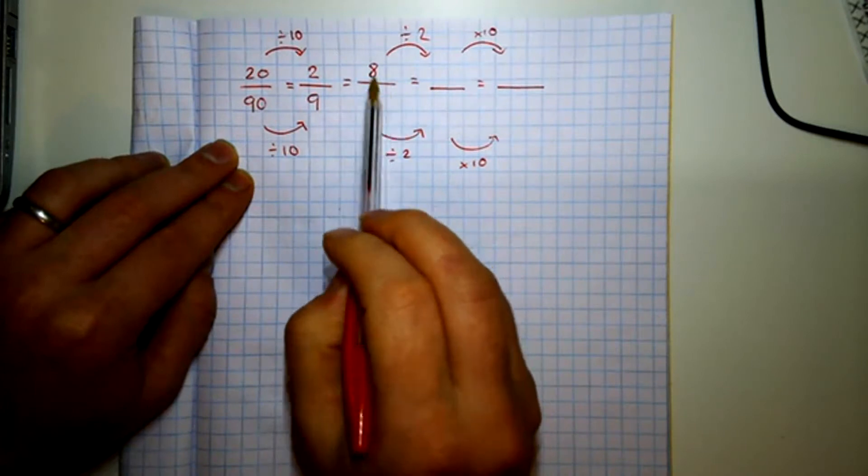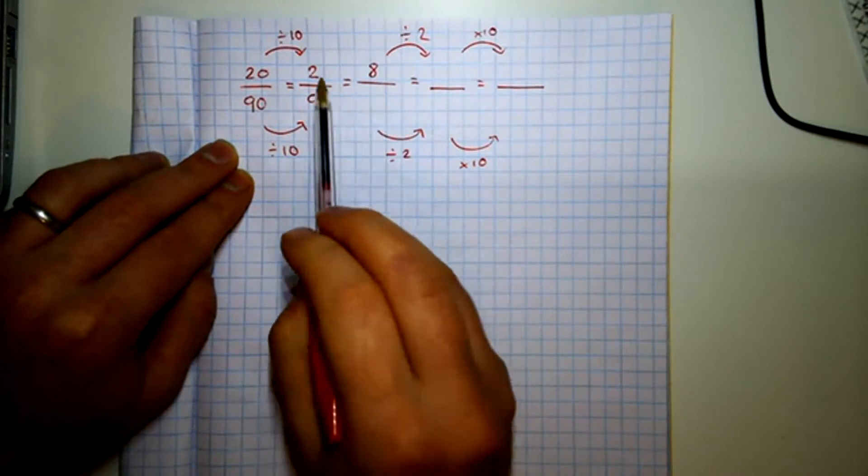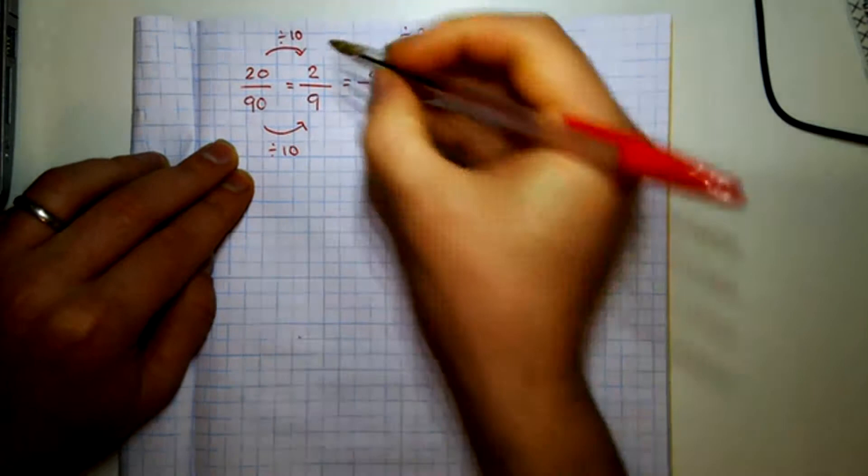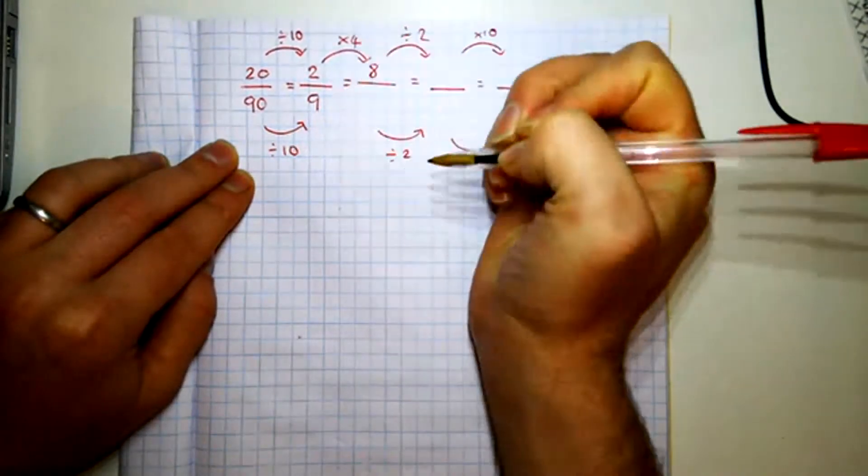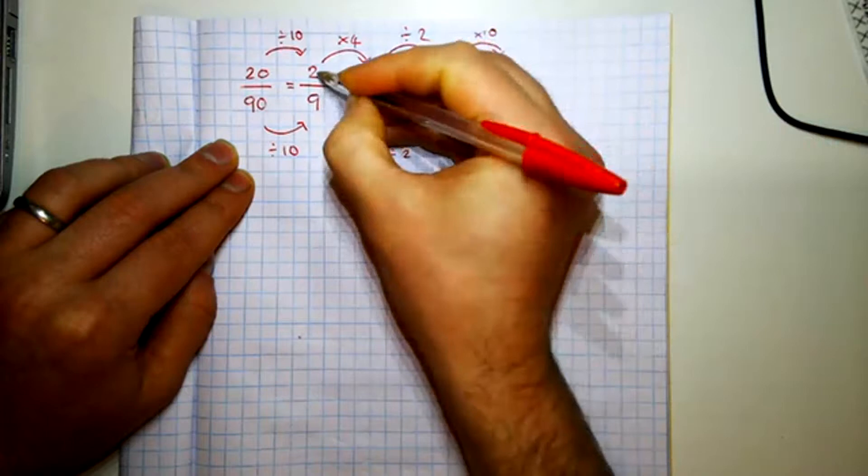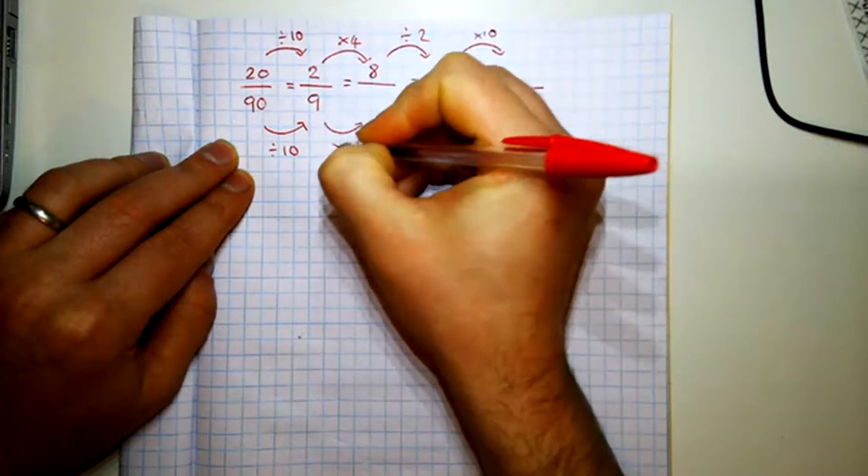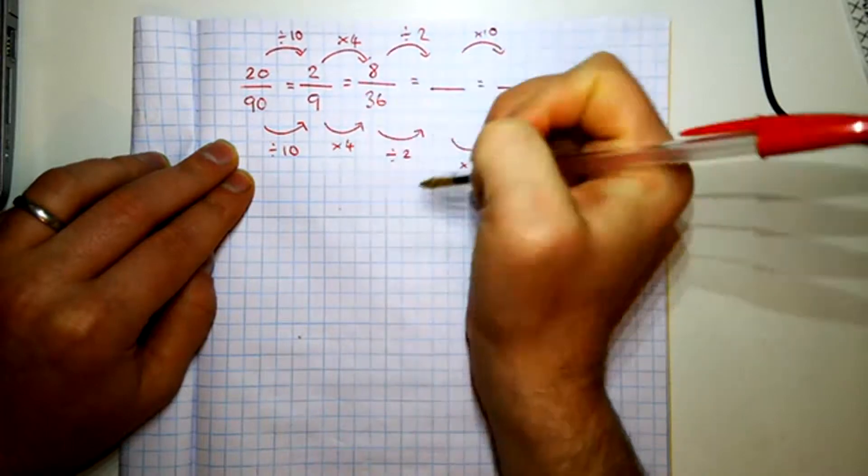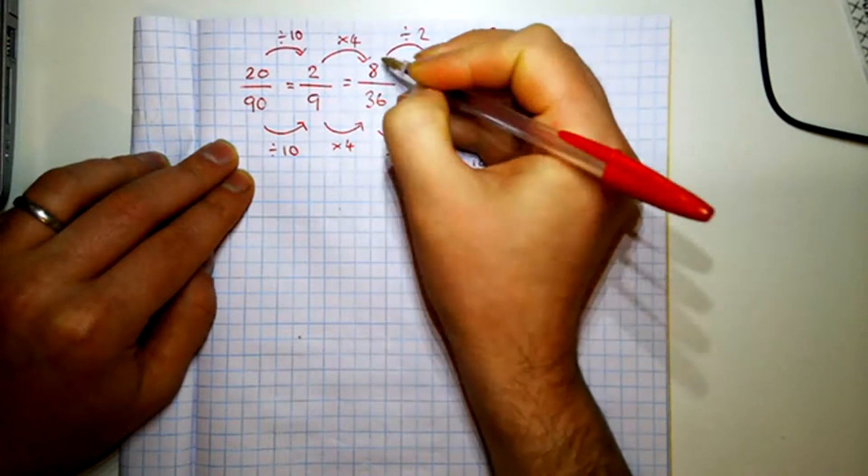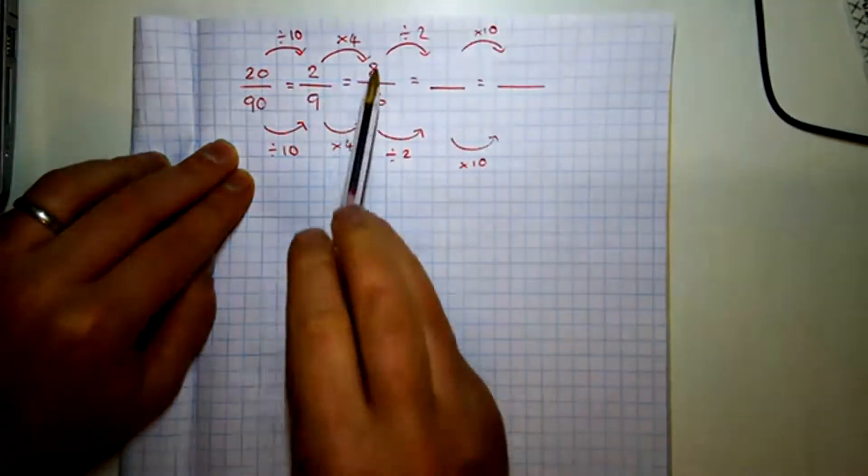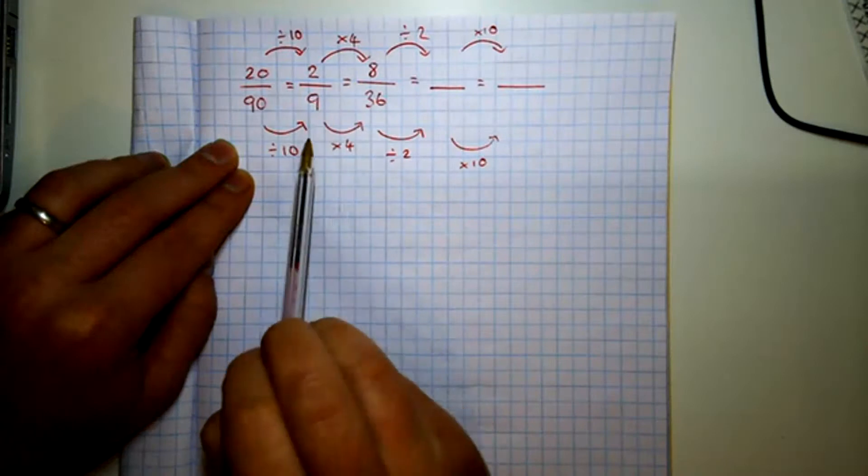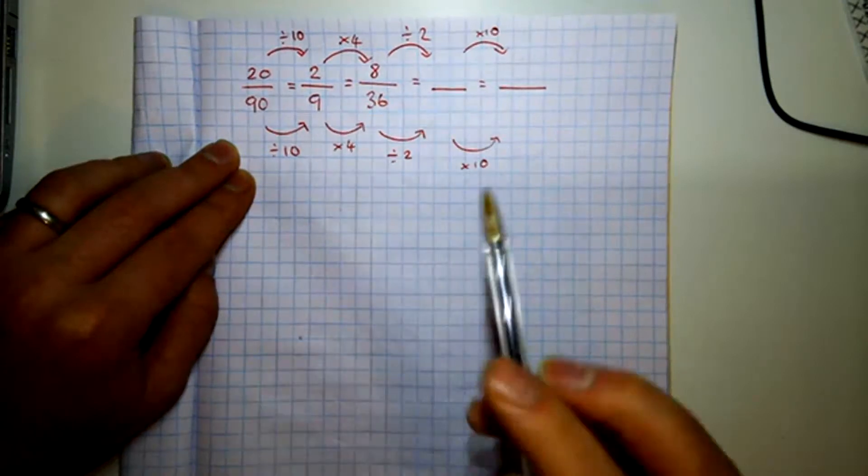What if we wanted eight pieces shaded in? 2 to 8, we have to times by 4. And we do the same here, so times by 4. It would have to be in 36 pieces and 8 of them would be shaded in to have the same amount. So 8 over 36 is the same as 2 over 9 is the same as 20 over 90.